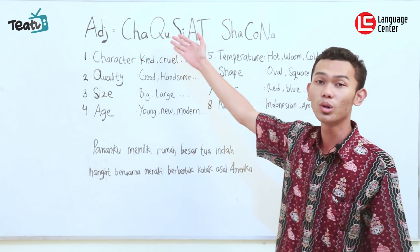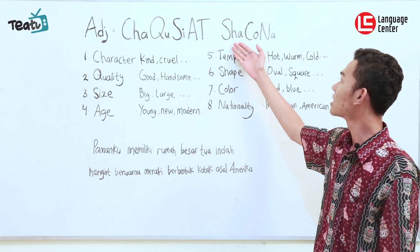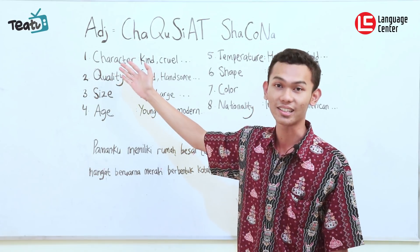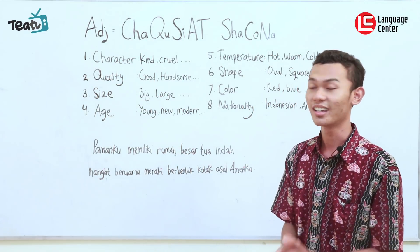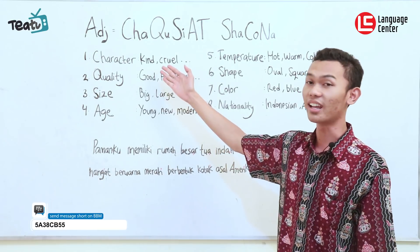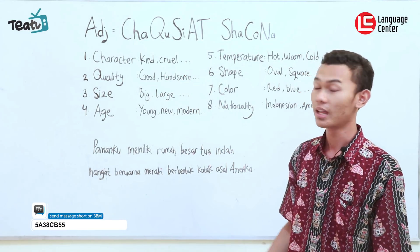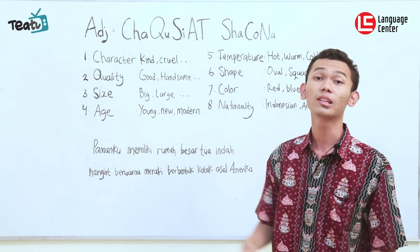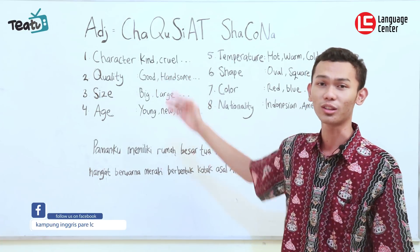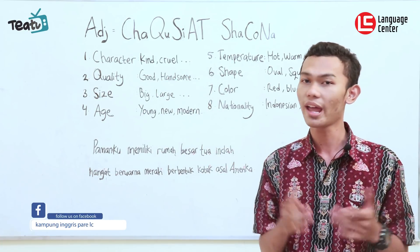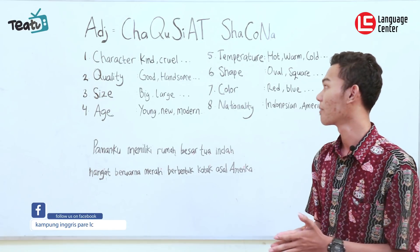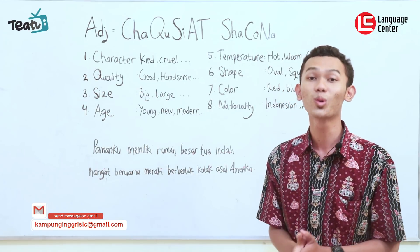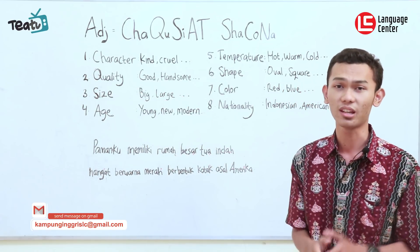The first in SAKUNA is S — character, or we call it 'sifat' in Indonesian. For example: kind, cruel, and so on. Next is A — quality, we call it 'kualitas'. For example: good, handsome, beautiful, expensive, rich, poor, and so on.